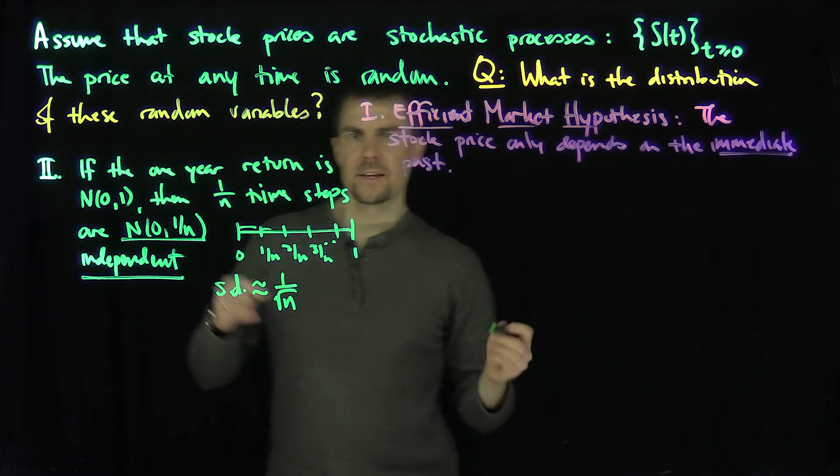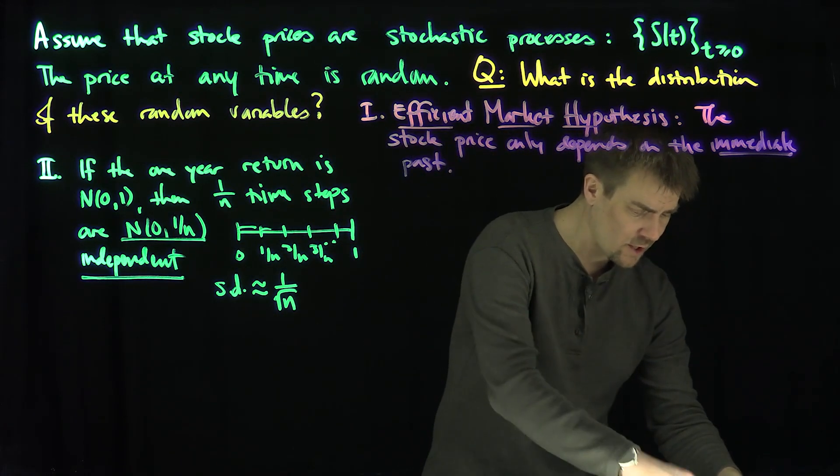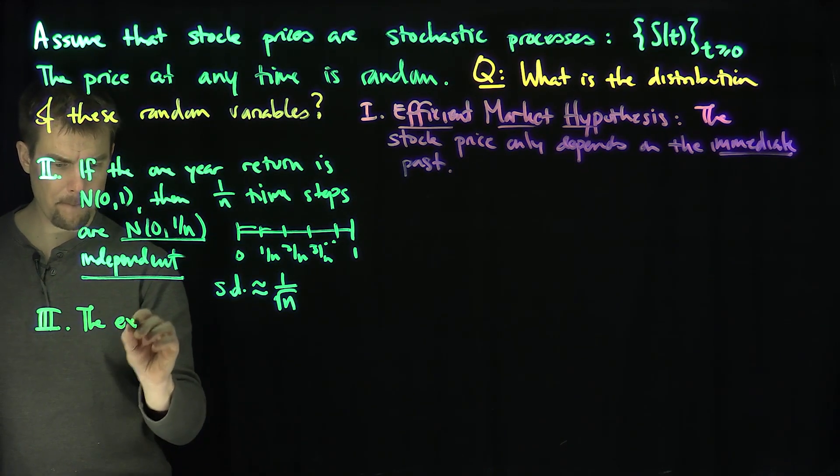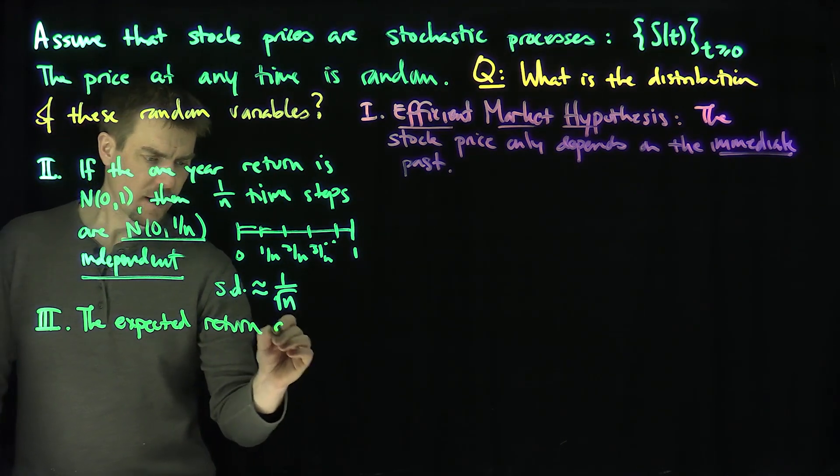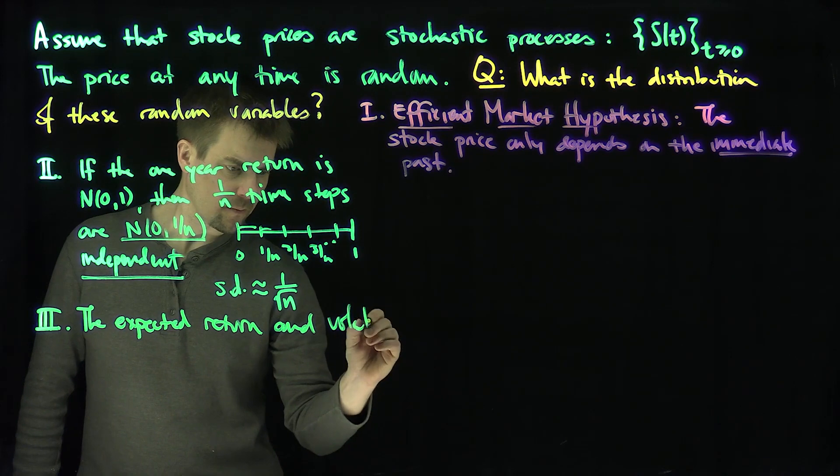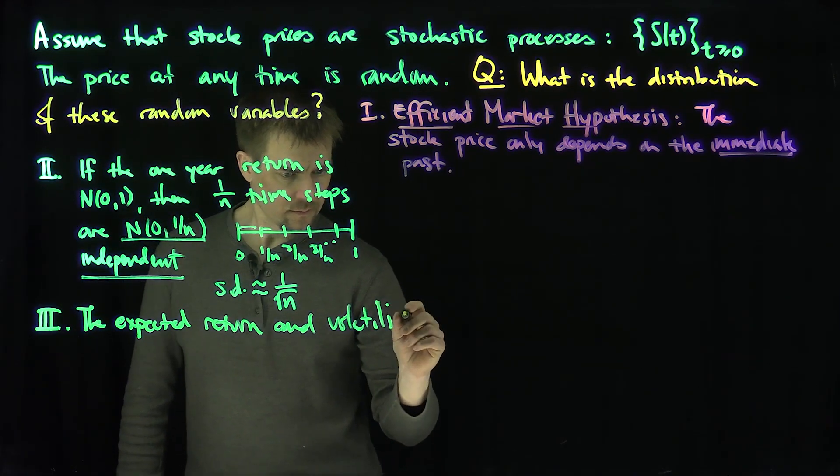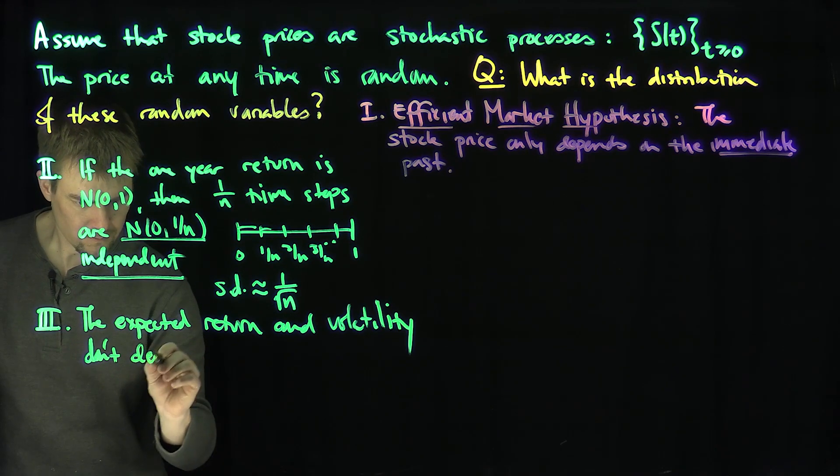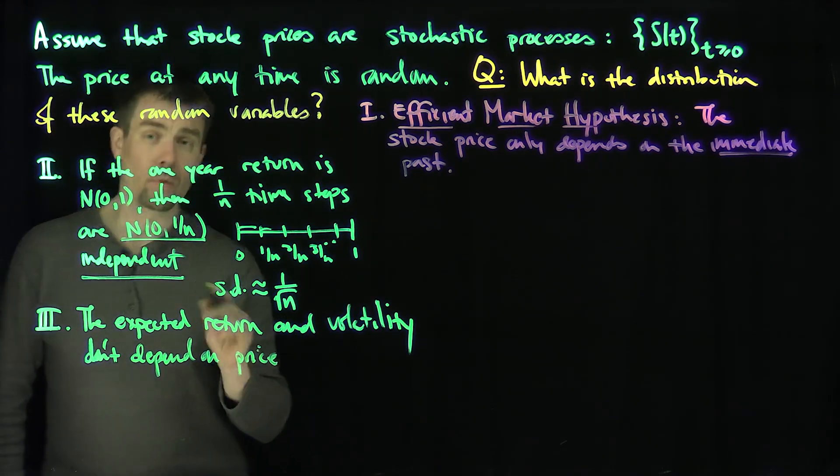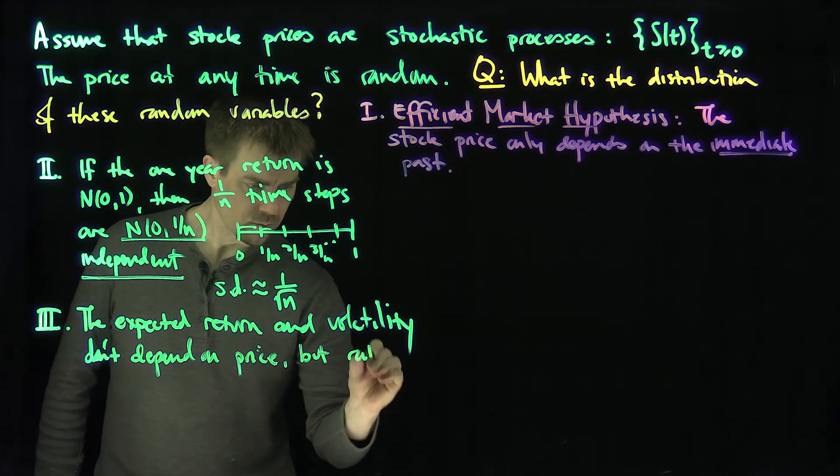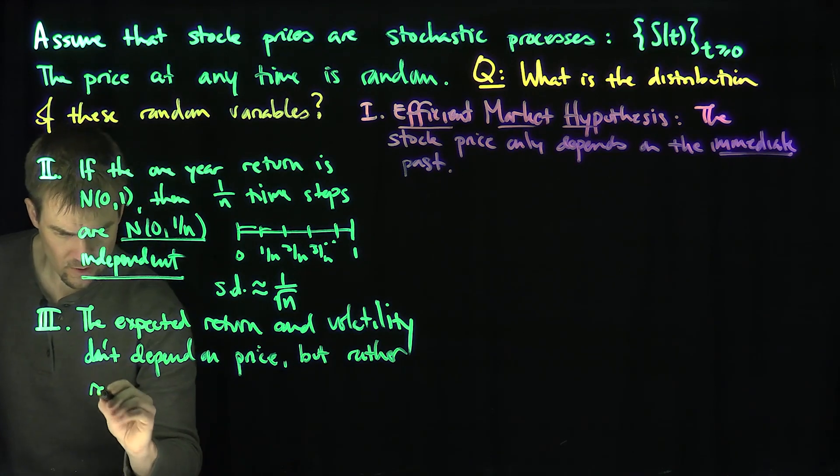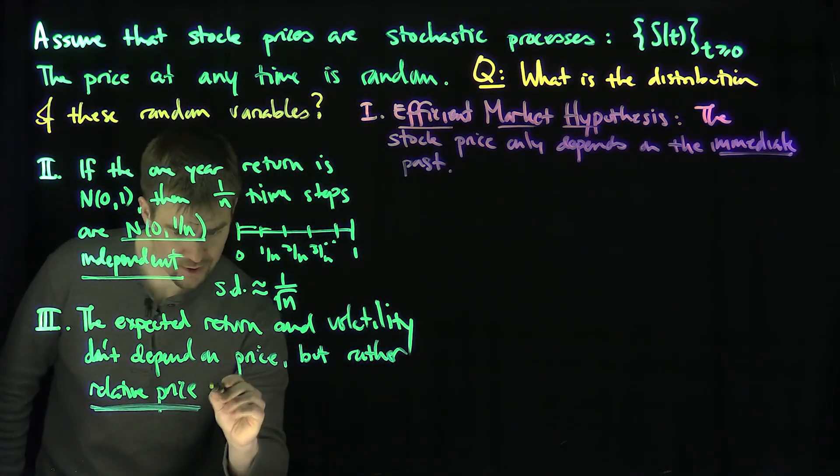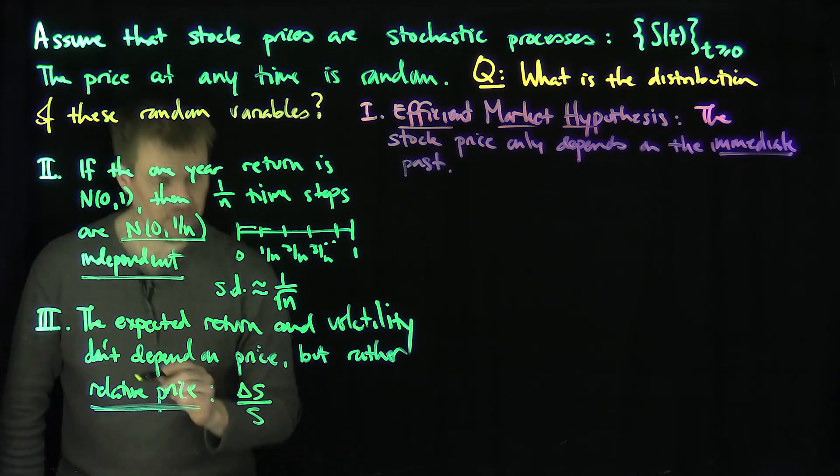And then the final thing we're going to assume is that the expected returns and expected volatilities don't depend on the actual price, but rather the percentages do—the relative price. The change in price over the price is what matters actually.